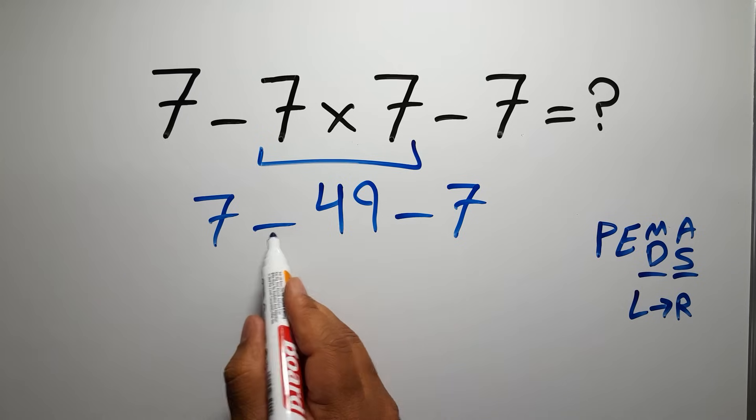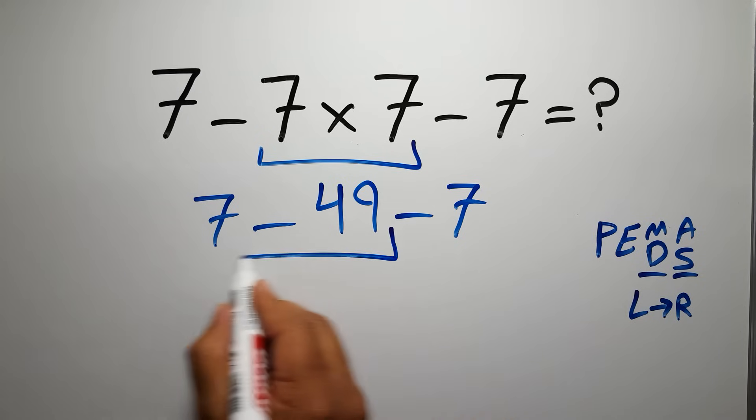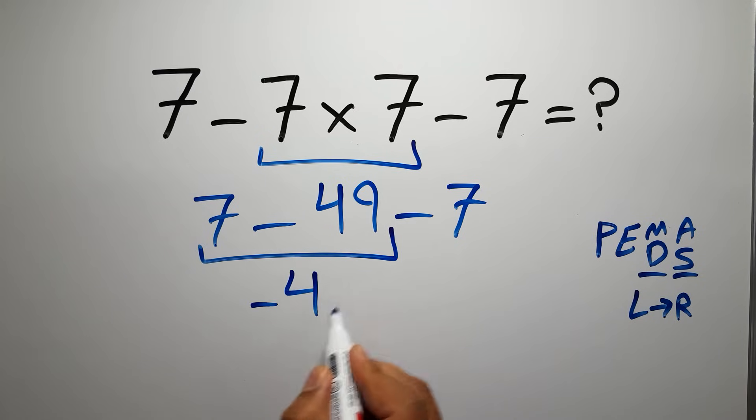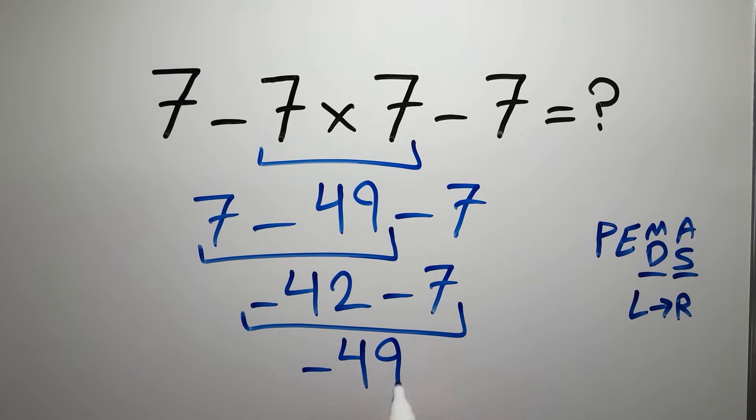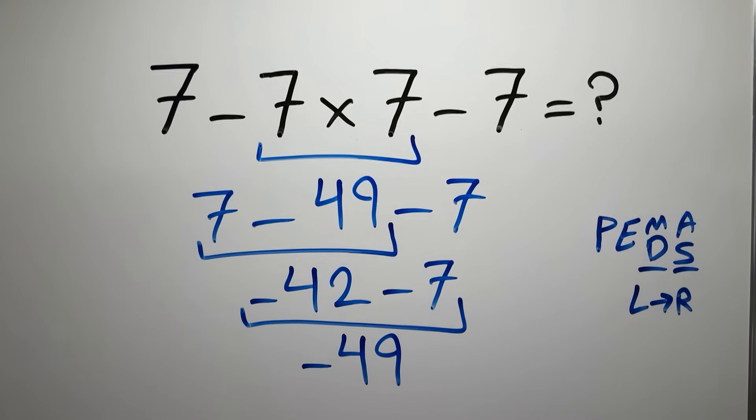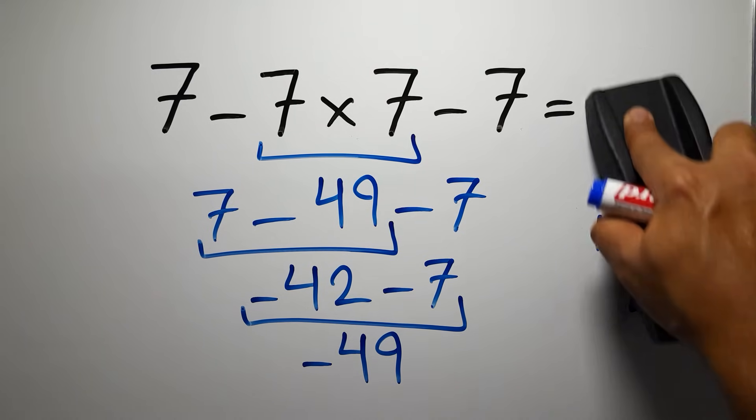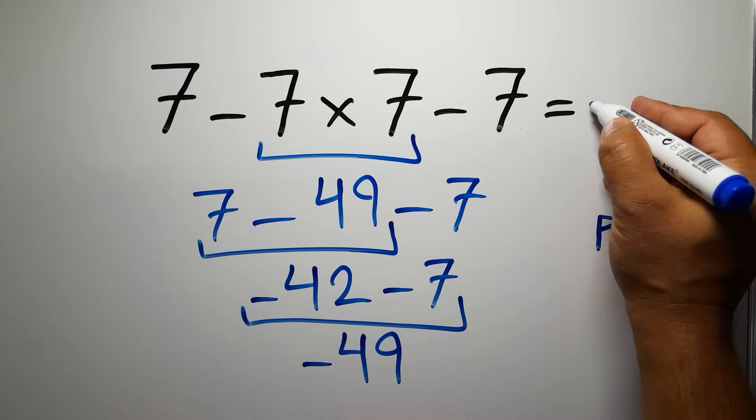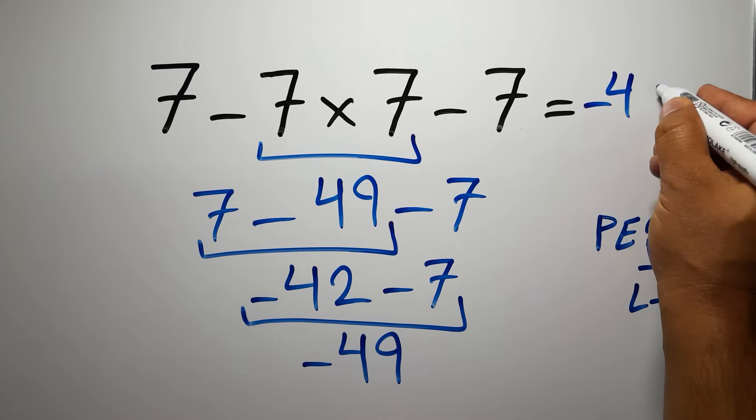So first 7 minus 49, which gives us negative 42. So negative 42 minus 7, which equals negative 49, and this is our final answer to this problem. The correct answer is negative 49.